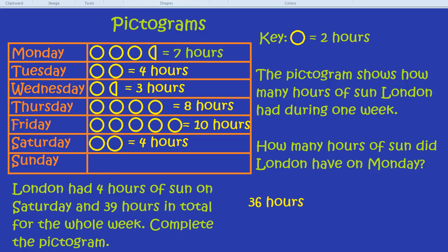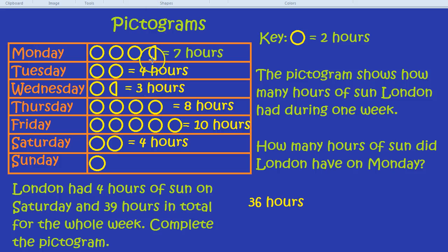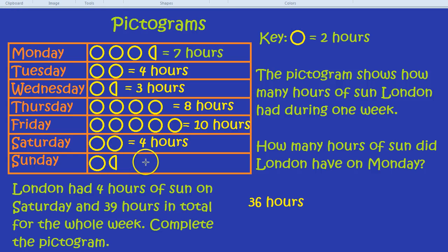How would we draw three hours on Sunday? One circle is going to be two hours. And remind me how we draw one hour — it's with a semicircle. So we can draw — let's just copy one of the semicircles we've already done, just to save a bit of time. Copy and paste. And that would represent one hour. So that would be three hours, for a total of thirty-nine hours in the week.